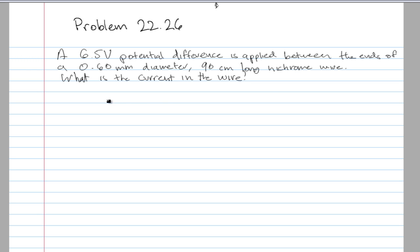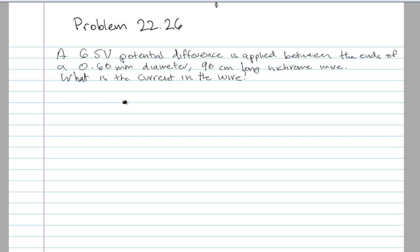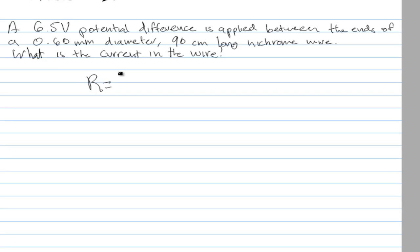The resistance formula is R equals ρL over A, and also for the current we need I equals voltage over resistance.